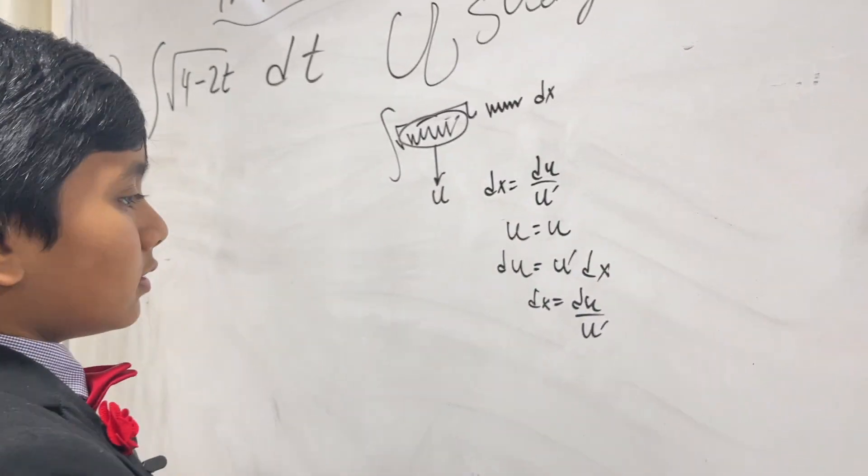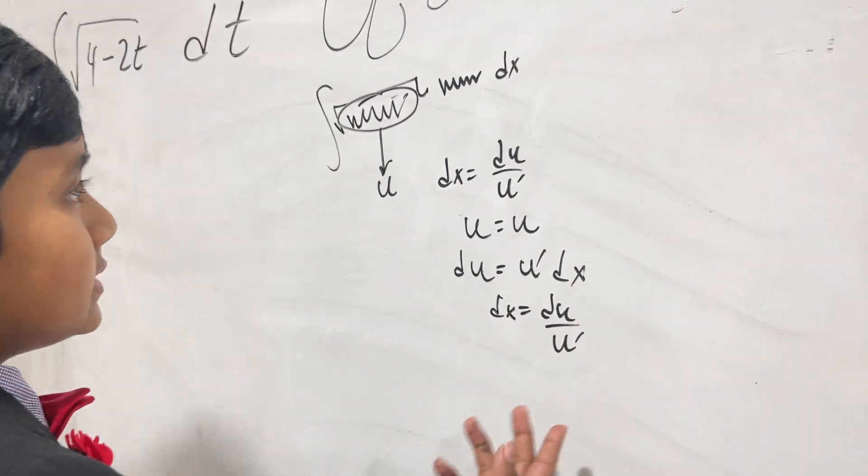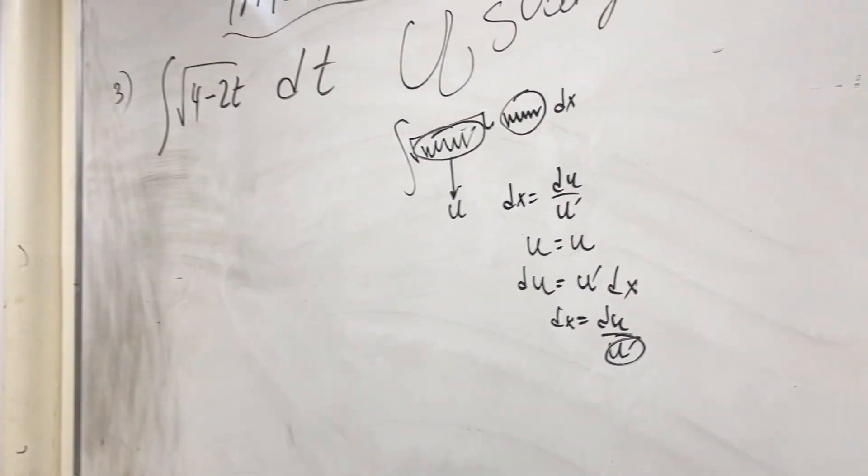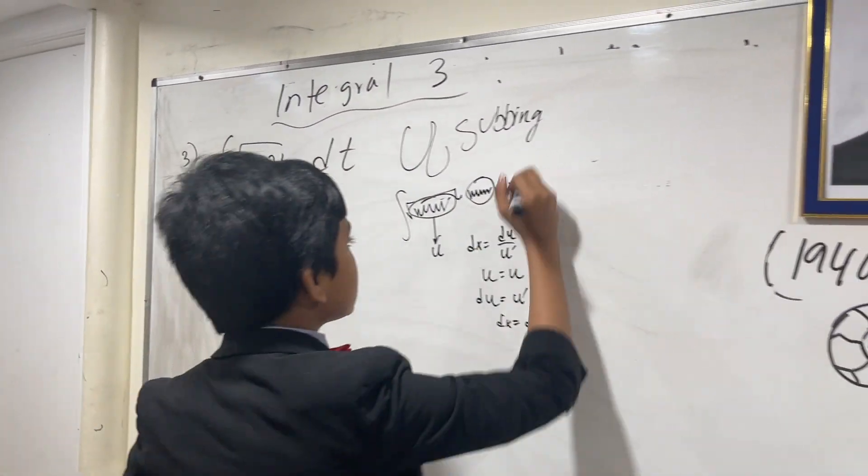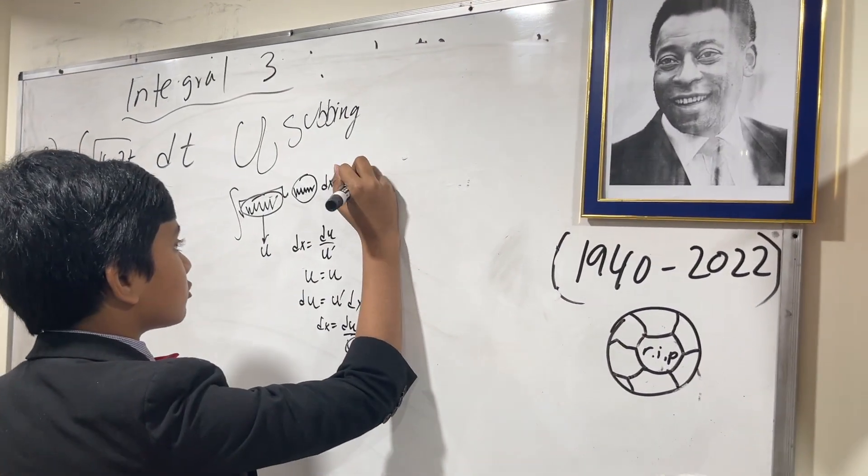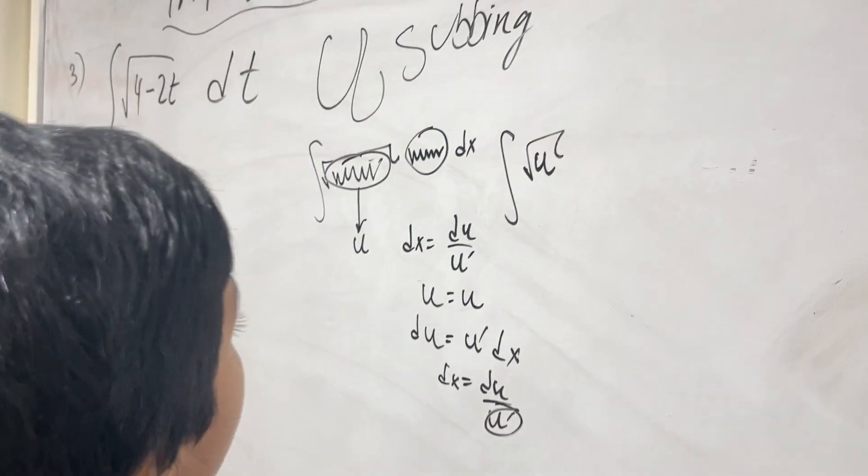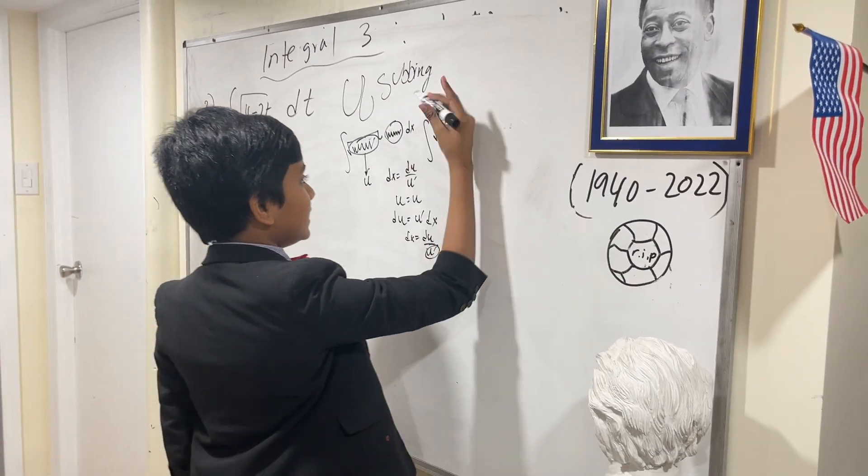And then whatever u' is, it will usually cancel out what is over here. So then you are simply left with the square root—not the square root, it can be anything—but in this case it's the square root of u, and then du.